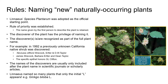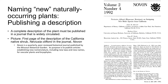Linnaeus named so many plants that usually only his initial L appears after the species name. In order for the name of your newly discovered plant to be recognized, you have to publish a complete description of the plant in English in a peer-reviewed, widely circulated journal.